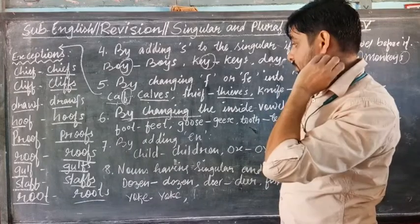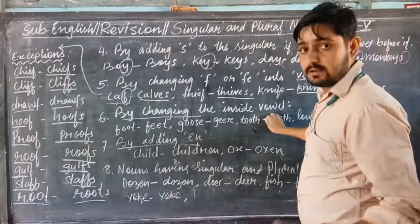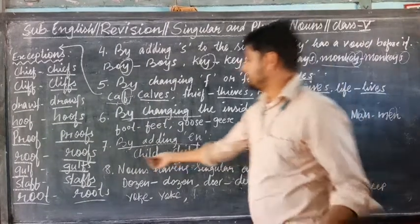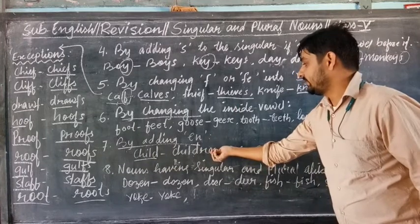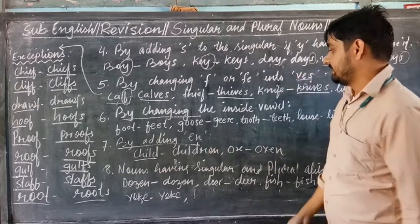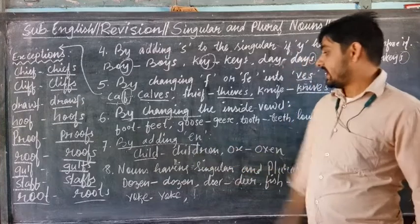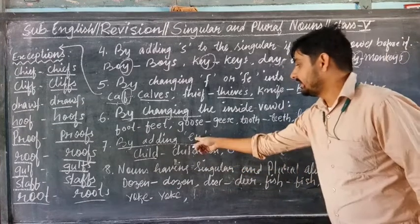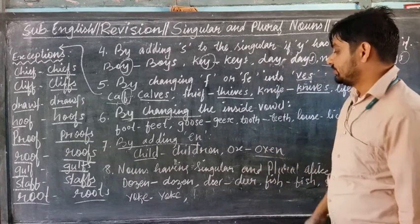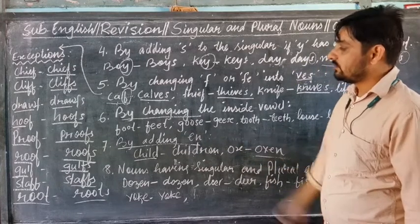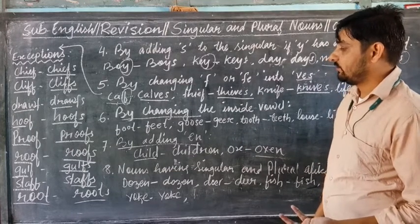Another rule: forming the plural by adding EN or REN. For example, 'child' becomes 'children' — we add REN at the end. These rules allow us to change singular nouns into plural nouns.